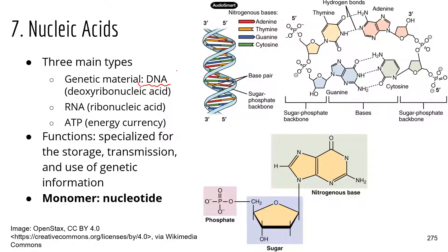We have DNA — that's probably something that everybody is very familiar with. We know that DNA is the genetic material. We also have RNA, which is a little bit different than DNA. DNA is deoxyribonucleic acid — D from deoxy, N from nucleic, and A from acid. RNA is slightly different: it's ribonucleic acid, missing that deoxy part. We'll talk about what exactly is different between DNA and RNA.